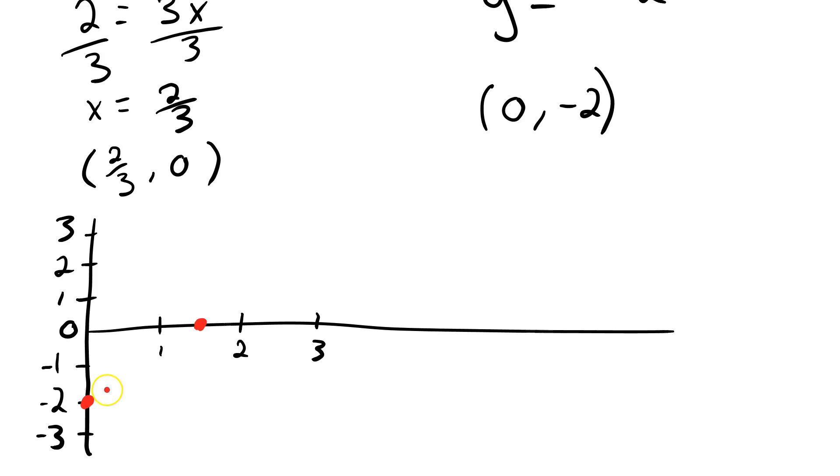And now I can take my straight edge and I can draw my line. There we go. We have got a formula here, f(x) equals 3x minus 2.